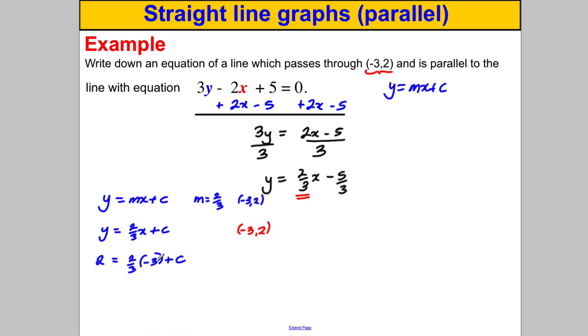2 thirds times 3 is 2, so 2 thirds times negative 3 is negative 2, so 2 equals negative 2 add C. Add 2 to both sides, I get C is 4. So at last I've got my C, I have my M, so I can say that Y is therefore equal to 2 thirds x add 4.